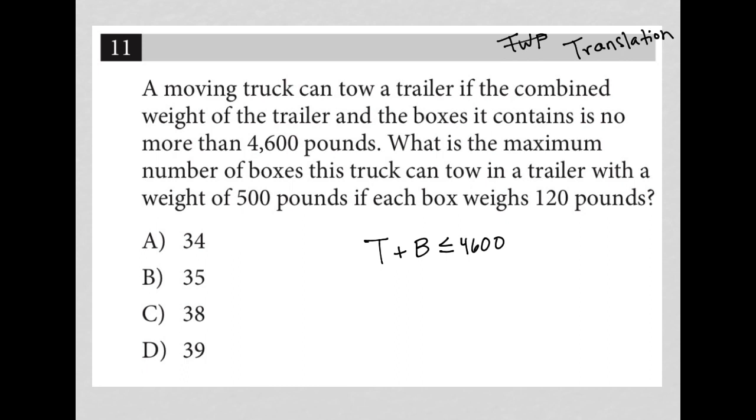The next sentence says, what is the maximum number of boxes this truck can tow in a trailer with a weight of 500 pounds? Okay, so now we're told that T is 500 pounds if each box weighs 120 pounds. So B equals 120.